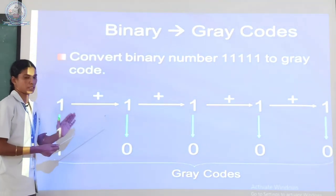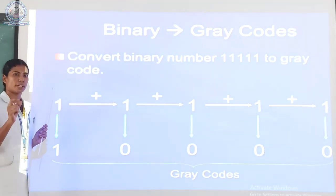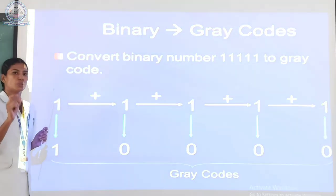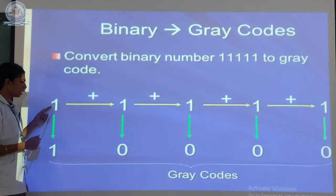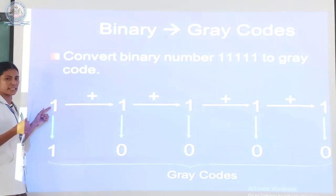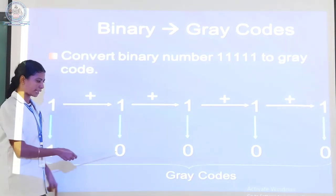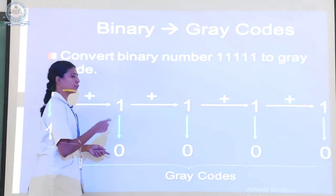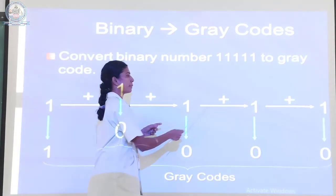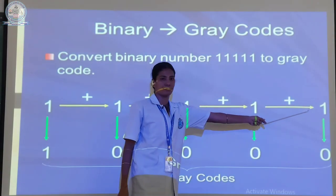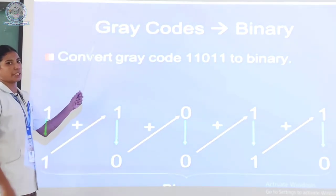In sequence order, the first digit is added to the second digit. First you need to know the addition table: 1 plus 1 equals 0 (sum 0, carry 1); 1 plus 0 equals 1; 0 plus 0 equals 0. The carry is not needed — only the sum is used. So the first digit 1 is placed here. Next, first digit plus second digit: 1 plus 1 equals 0. Then second plus third: 1 plus 1 equals 0. Then third plus fourth: 1 plus 1 equals 0. Then fourth plus fifth: 1 plus 1 equals 0. These are the binary numbers converted to gray code.